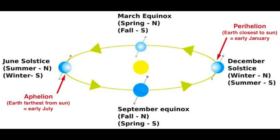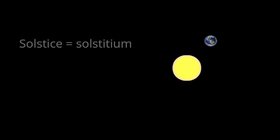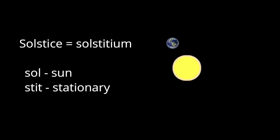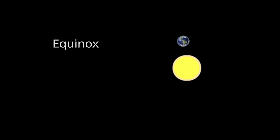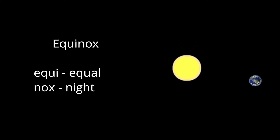During perihelion and aphelion, the length of day and night changes. During winter solstice, night is longer than day. And during summer solstice, day is longer than night. Equinox occurs when there is an equal length of night and day, which occurs twice a year. The occurrence of solstice or equinox varies relative to the hemisphere. Solstice comes from the Latin solstitium — sol meaning sun and stit meaning stationary. Equinox comes from Old French equinoxe — equi means equal and nox means night.